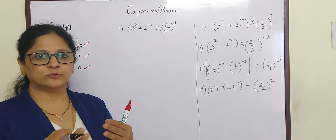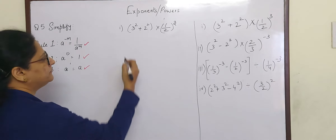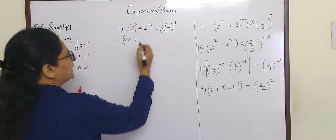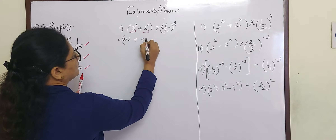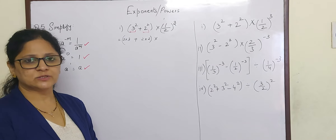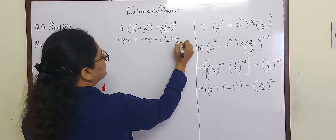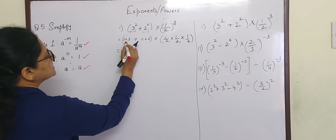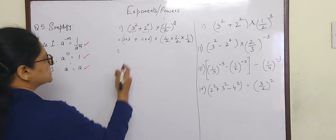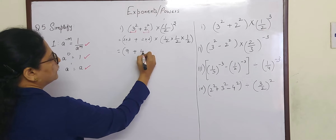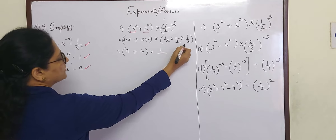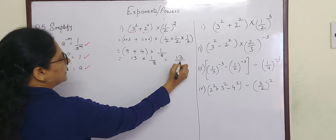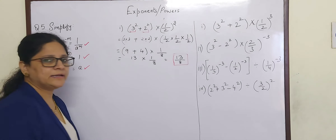It will be better that we do this sum together. What is 3 square? Yes, it is 3 into 3. And what is 2 square? It is 2 into 2. And what is 1 by 2 the whole raised to 3? It is 1 by 2 into 1 by 2 into 1 by 2. Now inside the round bracket there is both multiplication and addition — we do multiplication first according to BODMAS. 3 threes are 9, plus 2 twos are 4, into 1 by 2 cubed is 1 by 8. So 9 plus 4 is 13. 13 into 1 by 8 is equal to 13 by 8. So the answer is 13 by 8.